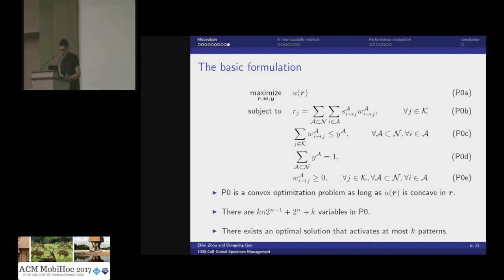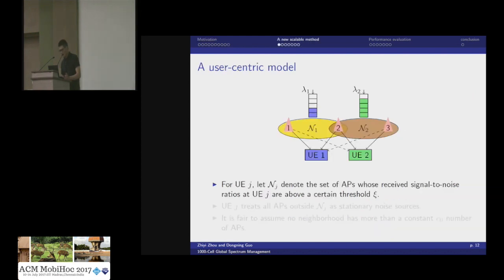Luckily, we proved that for this problem there exists an optimal solution which only activates at most K patterns. That is to say, although we have 2 to the power of N patterns, as long as we find K good patterns and optimally allocate bandwidth to them, we can still achieve the global optimal. The problem is how to find these K good patterns.